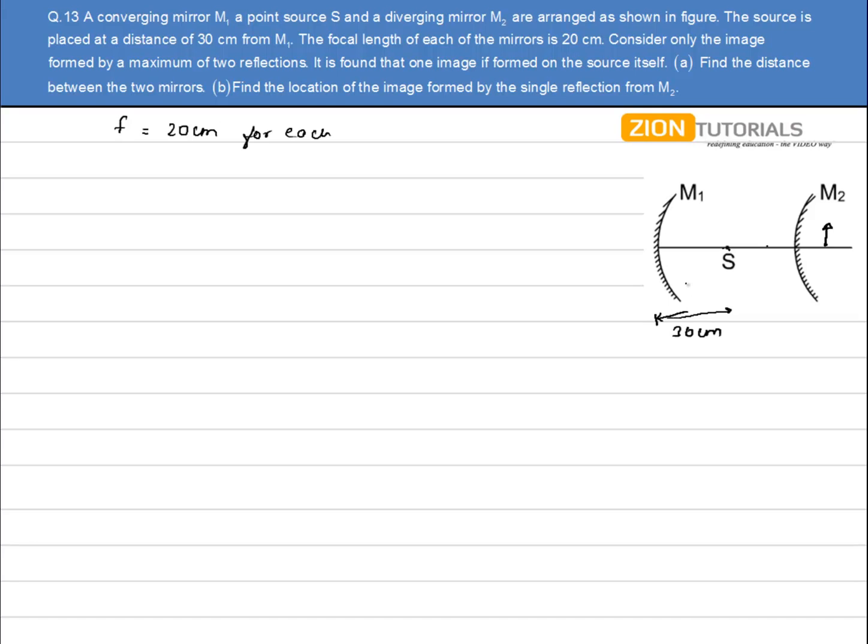So that is why the image that is formed by this object, this mirror will be beyond the second mirror, so that this image will be treated as an object for this very mirror, and the image is formed on the source. Let's say this distance is x. Fine. So first of all, I apply the mirror equation for this mirror.